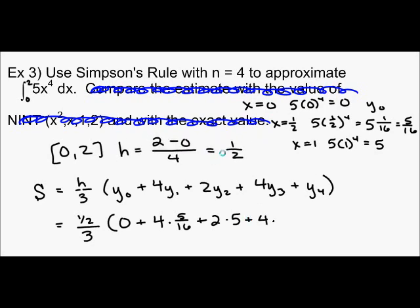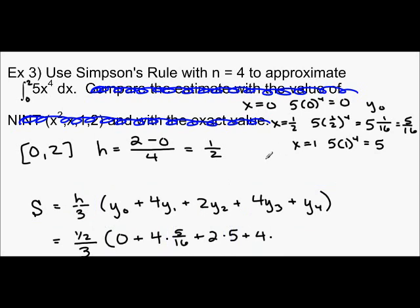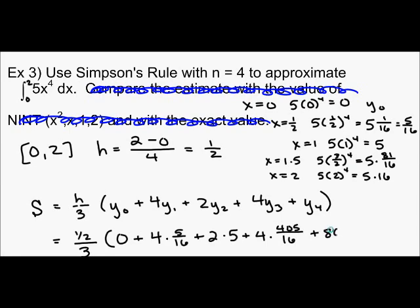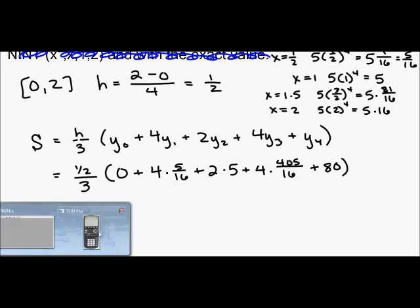The next number we're going to plug in for X is 1.5. So five times, and really that's three halves to the fourth is five times three to the fourth is 81 over 16. So that is 405 sixteenths plus next X is two, five times two to the fourth is five times 16, which is 80. So I filled in this part here. And all I need to do now is put this into my calculator here and see what happens.